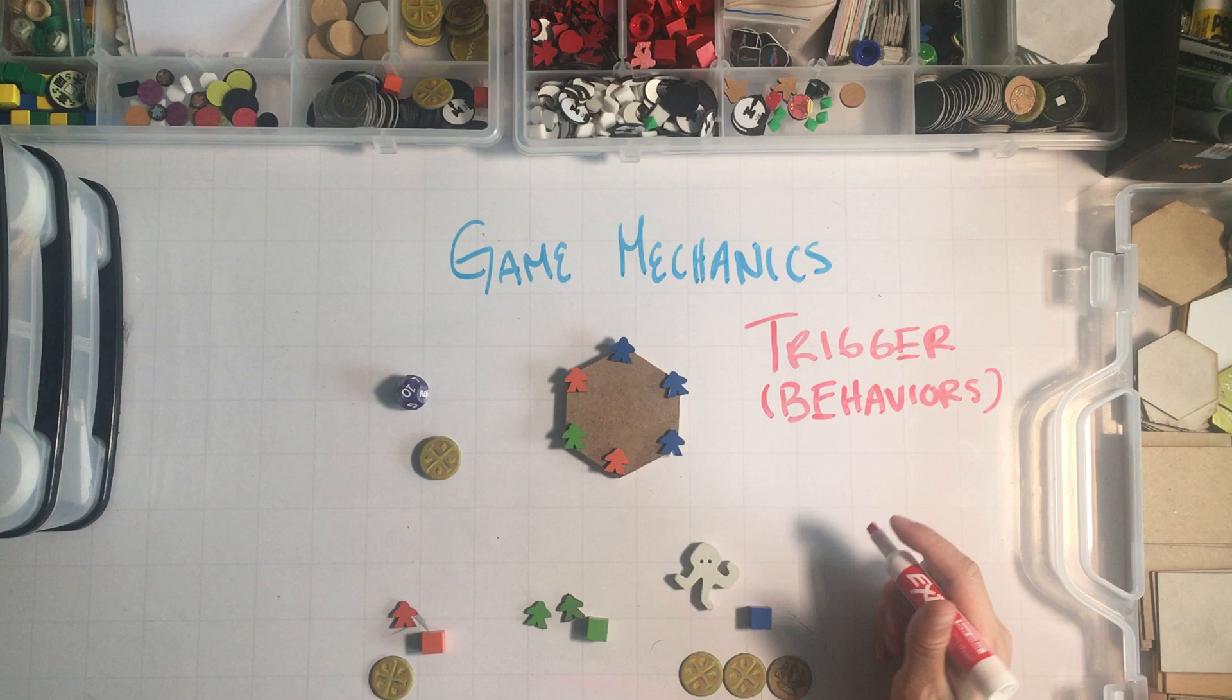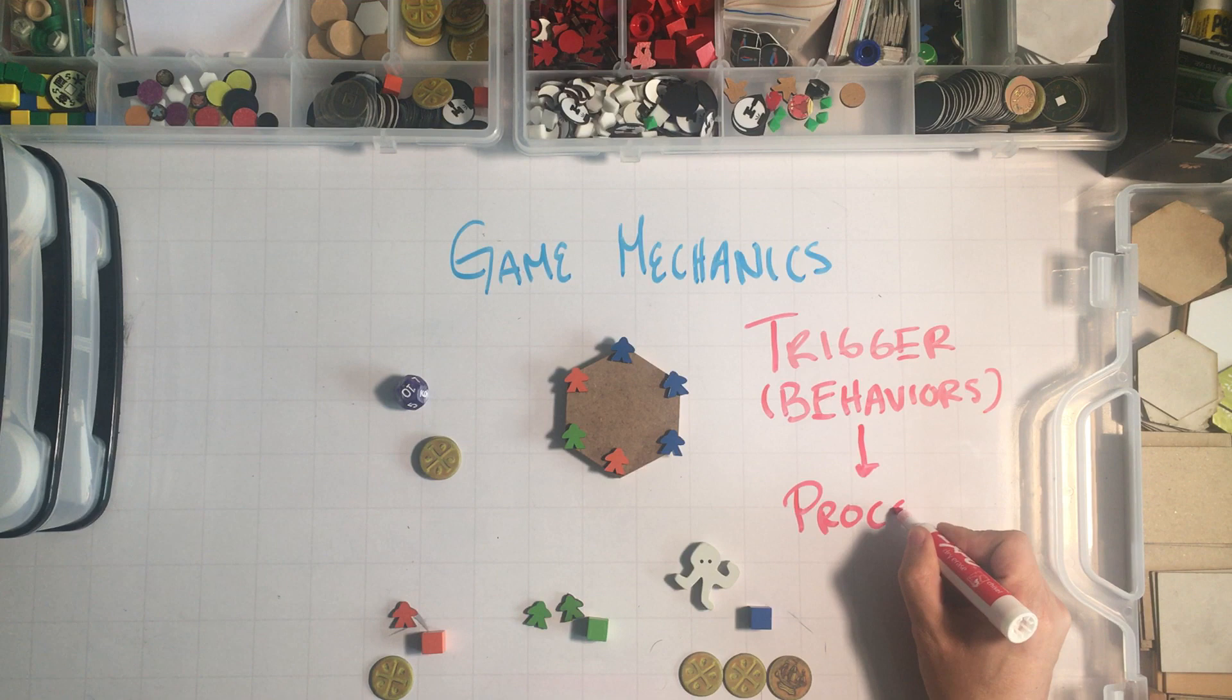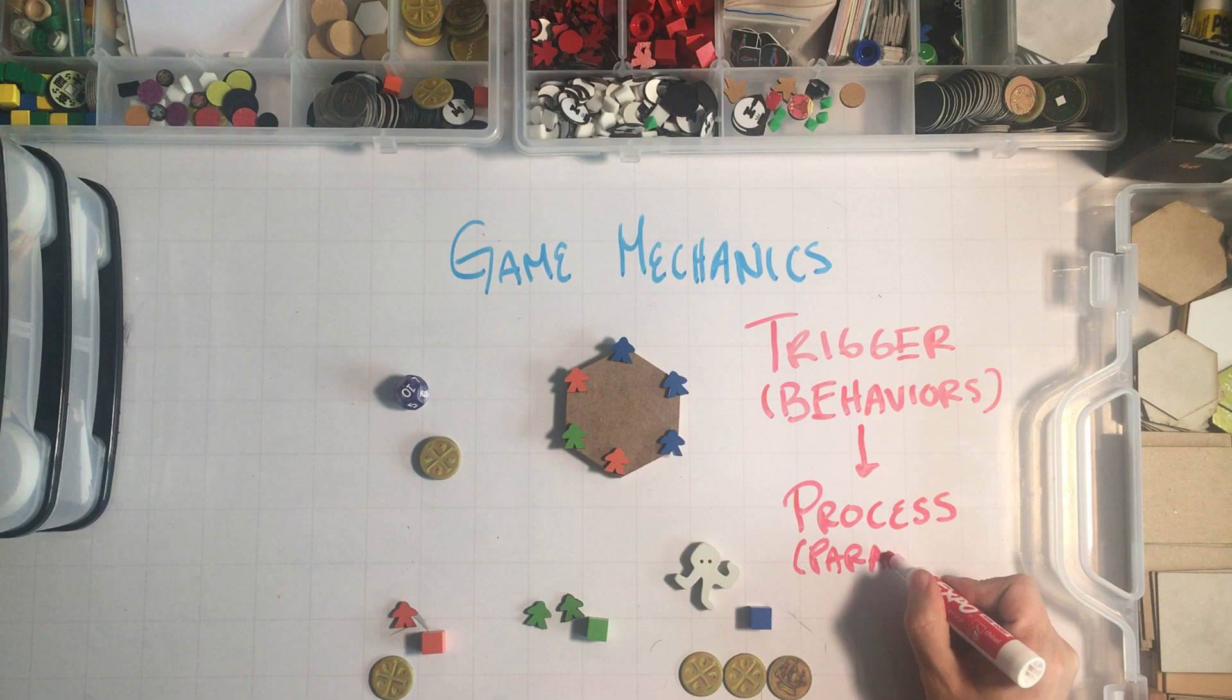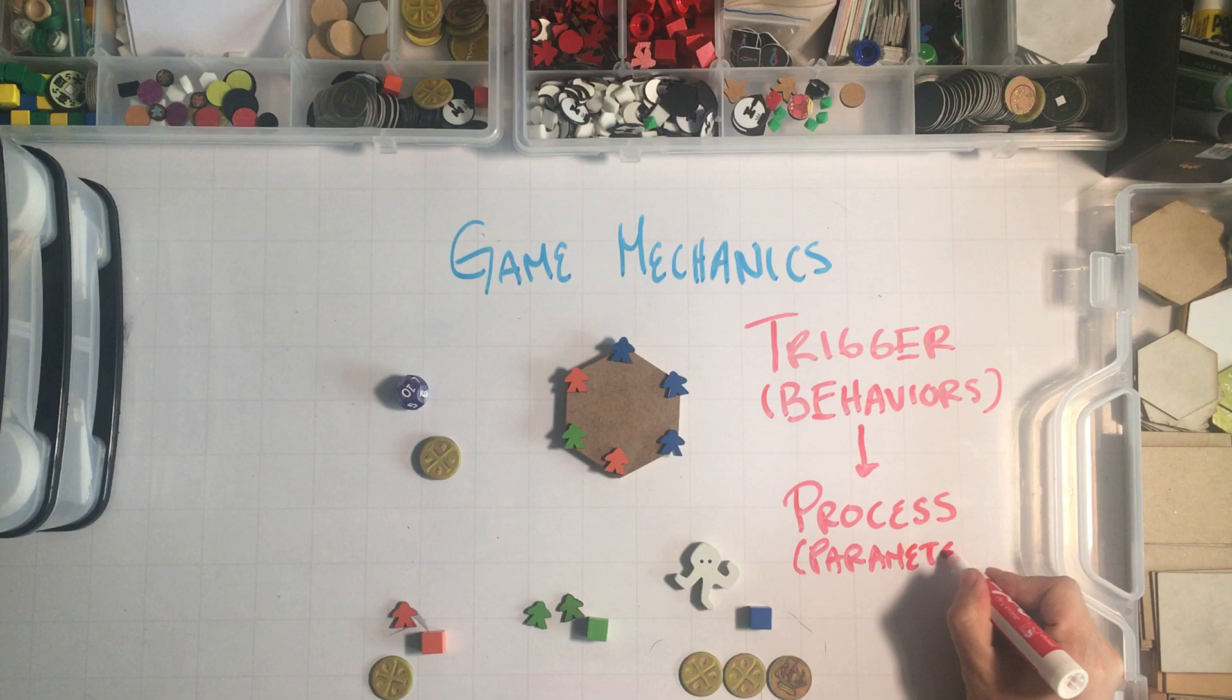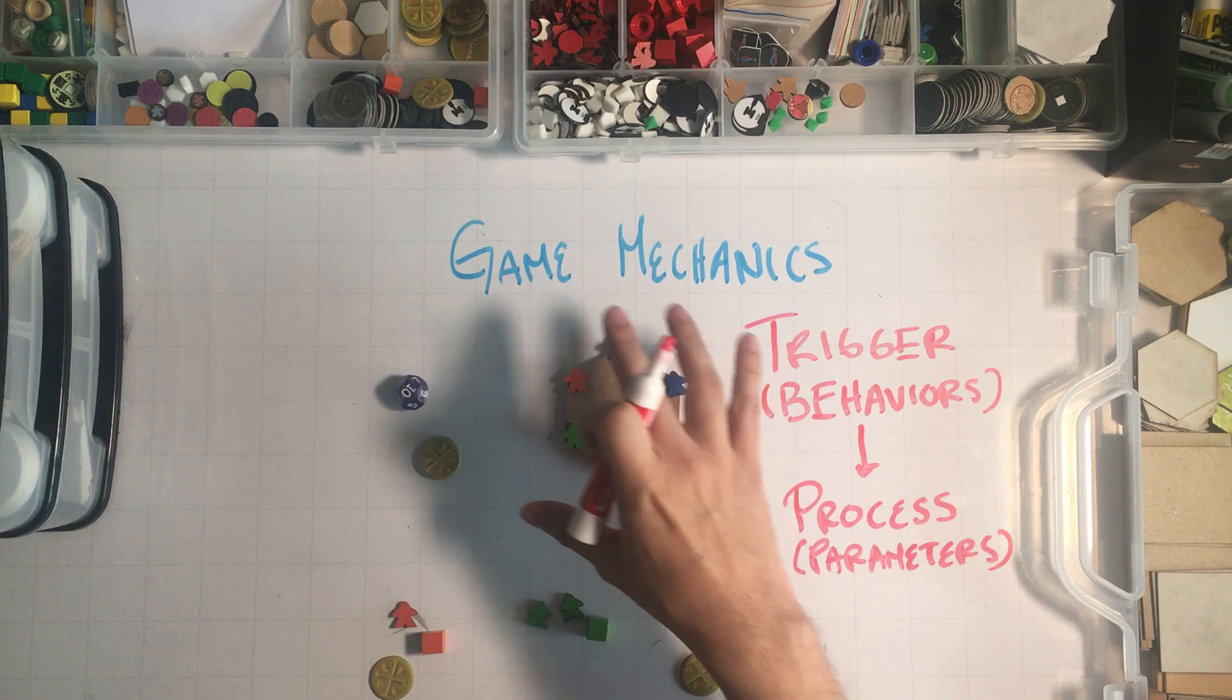So we have these triggers that can be behaviors. These behaviors will start a process. And this process will take into account several parameters. And this is complex. If you are a software developer, this is a function. And so you have some parameters, something like what happened, where are the pieces, every input that will affect this process.